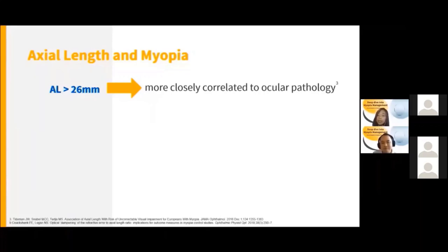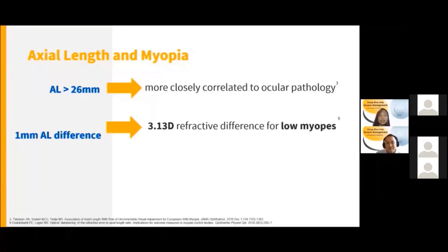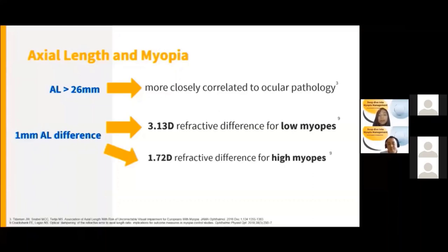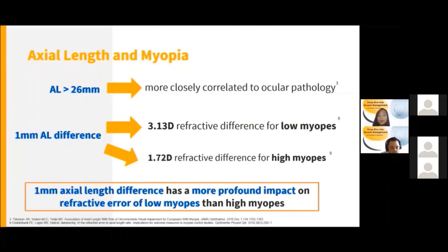It was actually found that the correlation of axial length with diopters is not constant throughout the years. One mm of axial length difference is associated with about 3.13 diopters of refractive difference in low myopes, and 1.72 diopters of refractive difference for high myopes. If you have a PD ruler right now, you can take it out and put your finger at the 1 mm mark — 1 mm is actually very tiny on the ruler, but it has a huge impact on the increase in power in your eyes. So 1 mm means about 3.13 diopters of power change for low myopes. We can deduce that a 1 mm axial length difference has a more profound impact on refractive error in low myopes compared to high myopes.